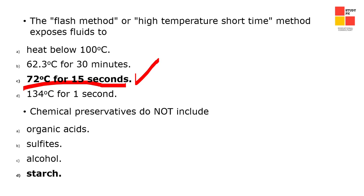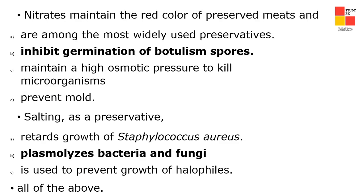Chemical preservatives do not include starch. Nitrates maintain the red color of preserved meats and inhibit germination of botulism spores — that is the correct option. Salting as a preservative is used to plasmolyze bacteria and fungi.